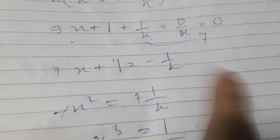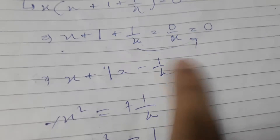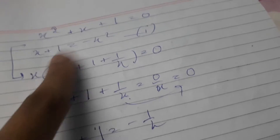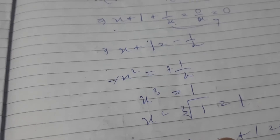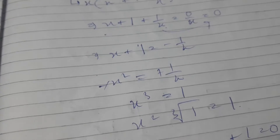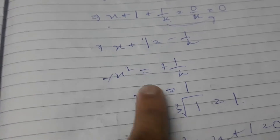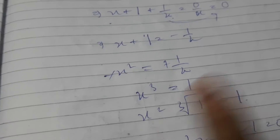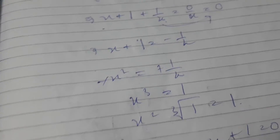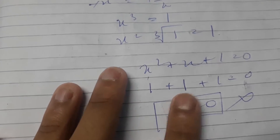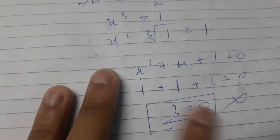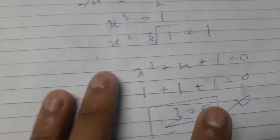So x plus 1 equals negative 1/x — shifting to the RHS. But we already had x plus 1 equals negative x². So negative x² equals negative 1/x. Cancelling the negatives and cross-multiplying, we're left with x³ equals 1. So x equals the cube root of 1, which is just 1. Substituting back: 1² plus 1 plus 1, that's 3 equals 0.